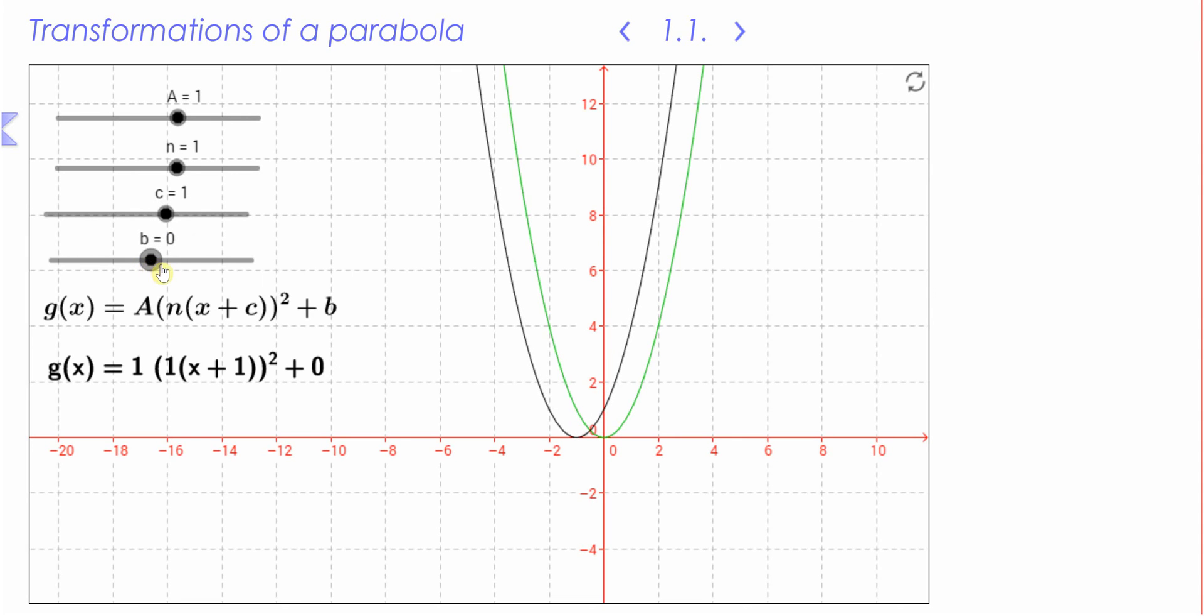Let's have a look what b does. I'm going to increase b, and you can see that the graph is being translated up. When I decrease b, it's being translated down. So the graph is not being dilated at all, it's just being translated—moved up or down by whatever the value of b is. And it moves in the same direction as the sign.